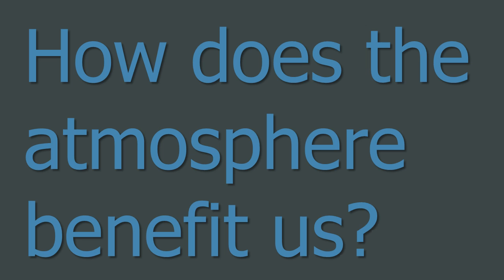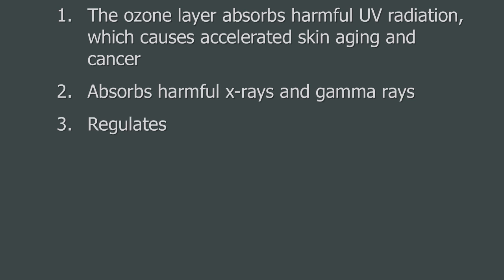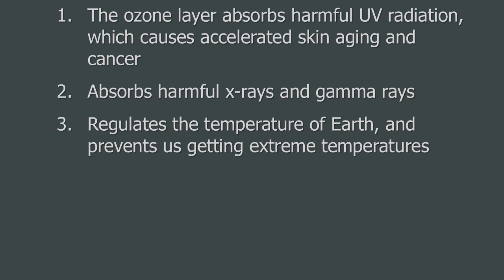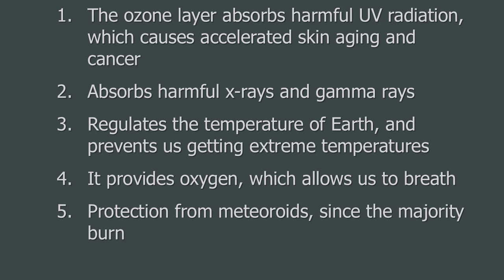How does the atmosphere benefit us? The ozone layer absorbs harmful ultraviolet radiation, which causes accelerated skin aging and cancer. The atmosphere also absorbs harmful X-rays and gamma rays, which cause radiation poisoning and ultimately death. So the atmosphere really is quite handy. The atmosphere also regulates the temperature of Earth, and prevents us from getting extreme temperatures. This is why the surface temperature on Earth is usually between negative 90 and positive 60 degrees Celsius. The atmosphere also provides us oxygen, which allows us to breathe. And finally, it protects us from meteoroids, since the majority of them burn up in the atmosphere. Shooting stars are just meteors burning up in the atmosphere.